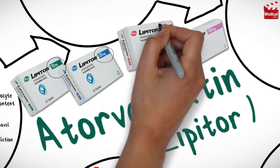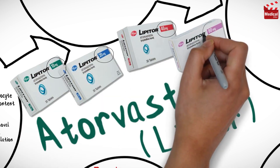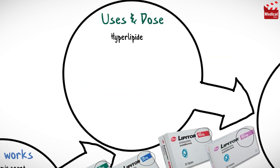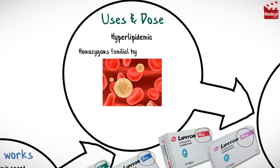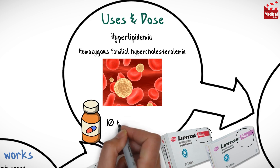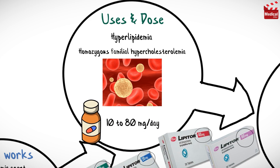Atorvastatin is available as 10, 20, 40, and 80 milligram tablets. It is used for hyperlipidemia and homozygous familial hypercholesterolemia. For more information about hyperlipidemia types, watch the video in the description.